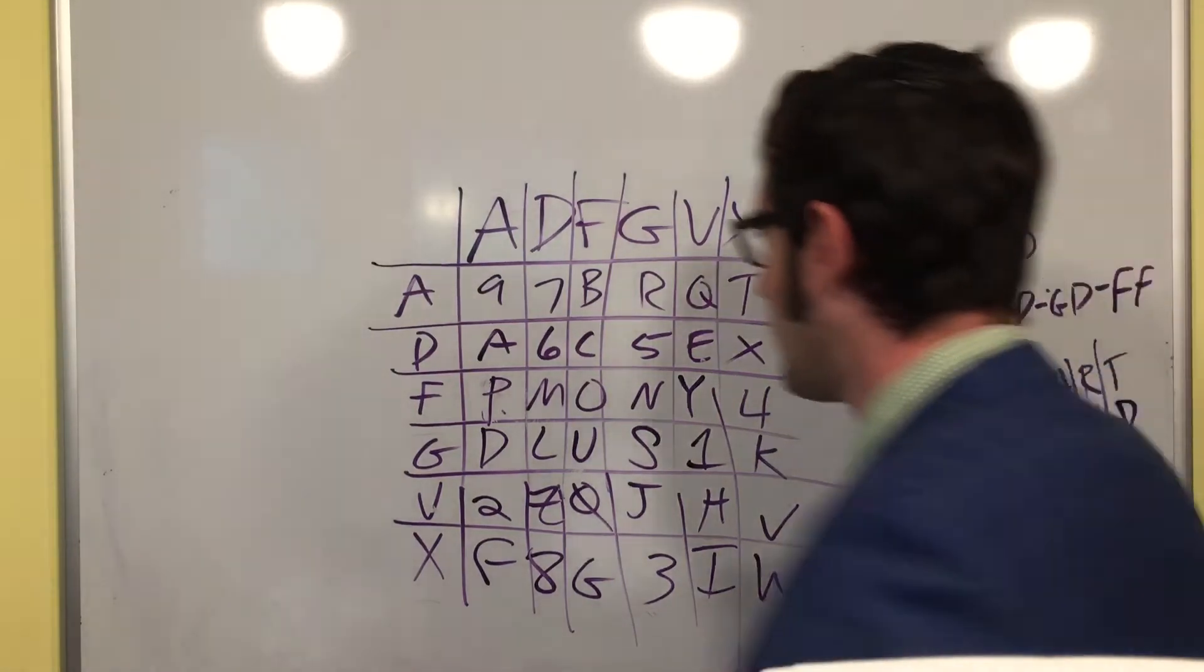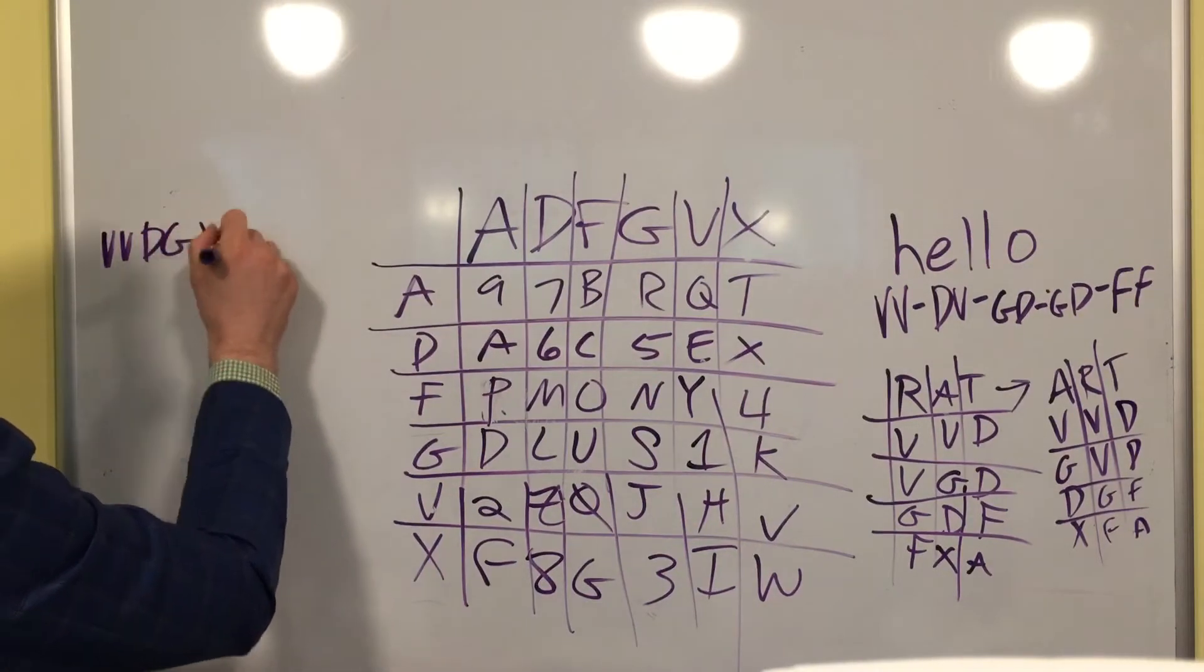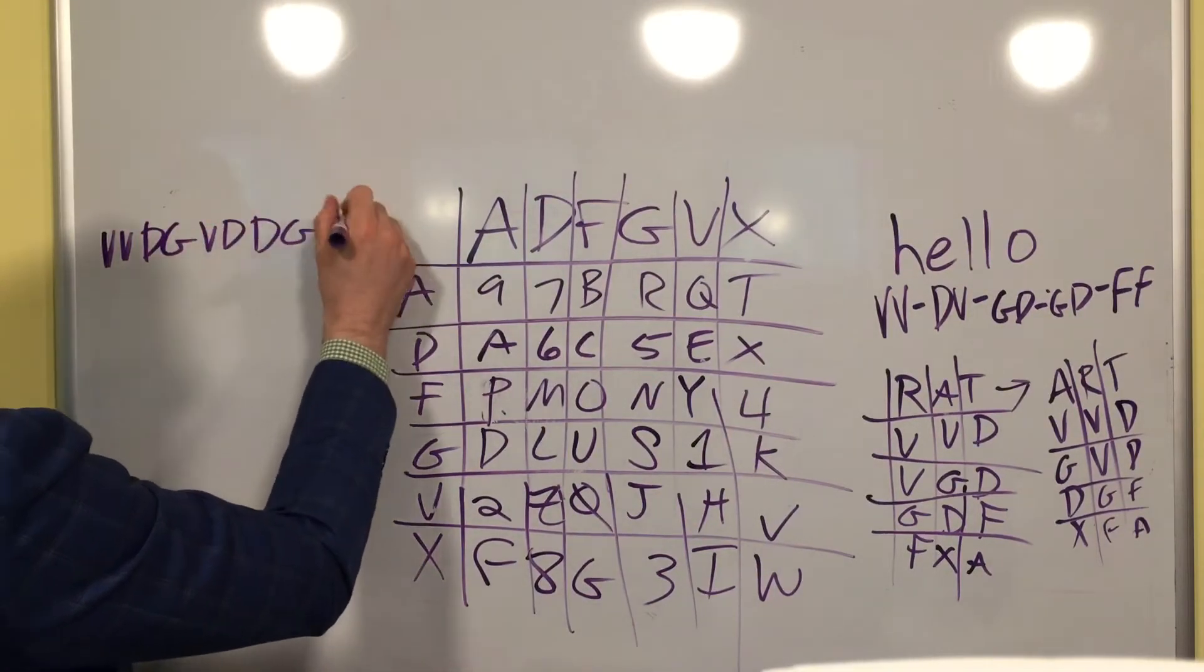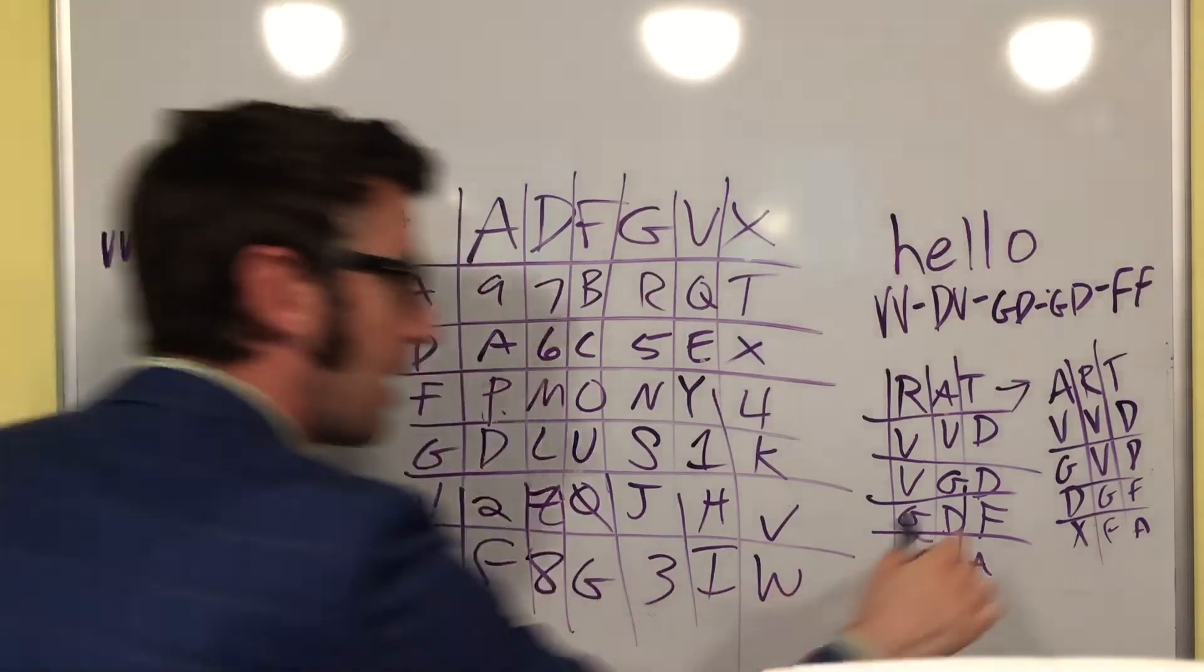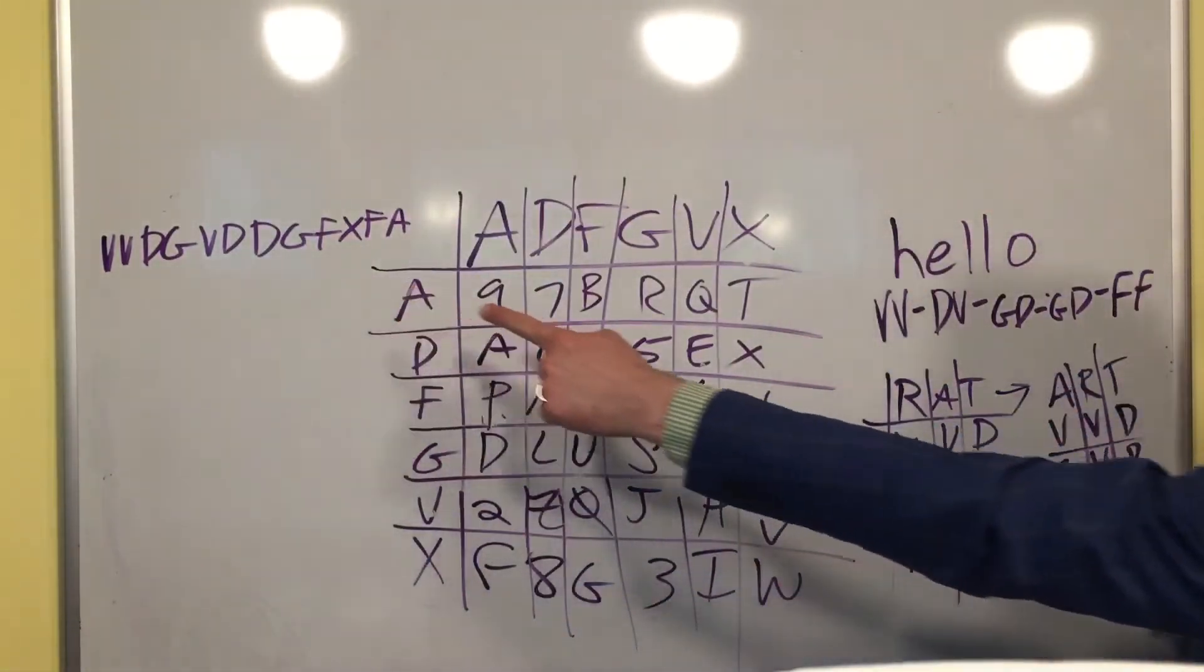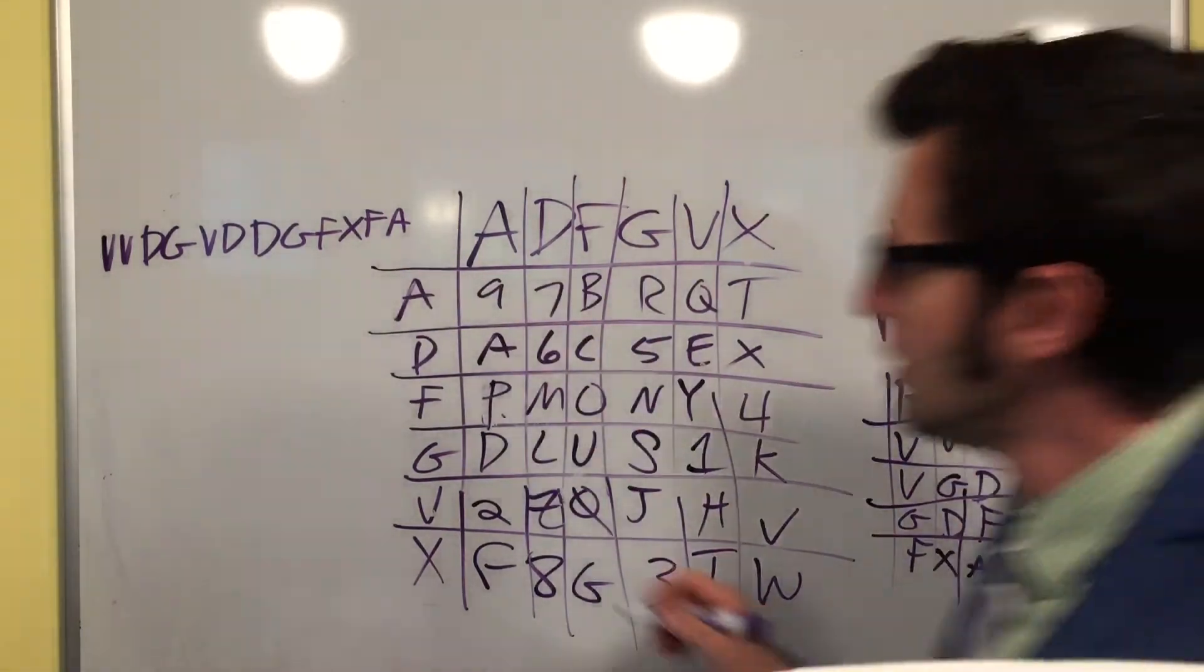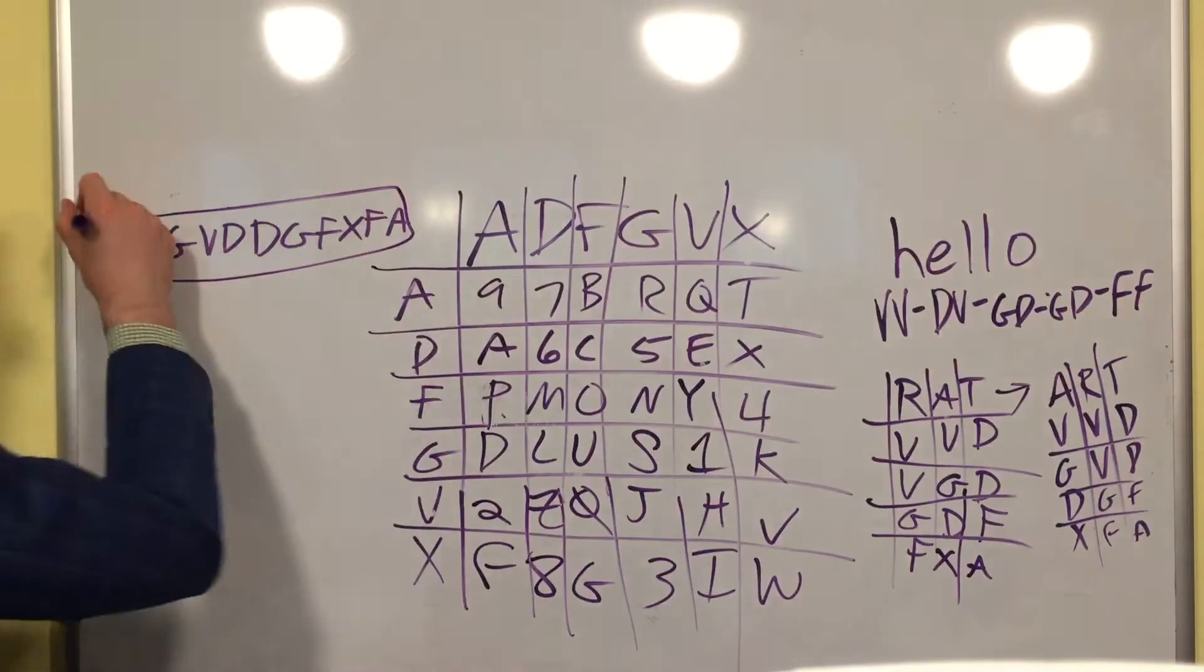And now my cipher becomes V, V, D, G, V, D, D, G, F, X, F, A. I just read this across. This is what I would send to somebody.